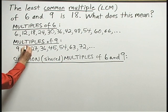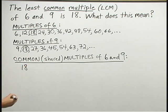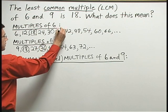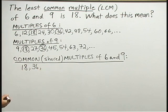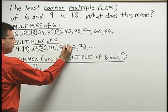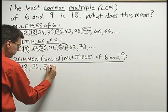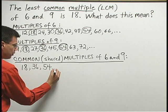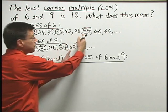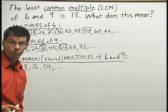So the common multiples of 6 and 9 would be the numbers that I see on both of these lists. Now, I notice that 18 occurs on both lists. So 18 is a common multiple of 6 and 9. I also notice that 36 is on both lists. That's another common multiple of 6 and 9. And, in fact, these common multiples go on and on forever. If I listed more multiples of 6 and 9, I would get more and more common multiples of 6 and 9.